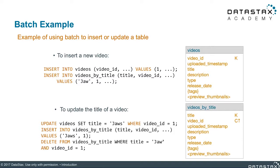When making changes to a video, we'll need to make the same changes to both tables. For the videos table, we can use an update to modify the column with a new value — in this case, the title of the video is being changed from 'Jaw' to 'Jaws.' With the videos_by_title table, the procedure is a bit different since the column we are changing — title — is actually part of the primary key, as you can see in our table diagram.